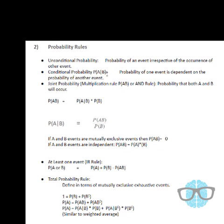Third is joint probability, also called the multiplication rule or AND rule. The probability of both events occurring, P(A∩B), equals P(A|B) multiplied by P(B).